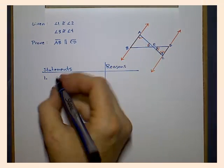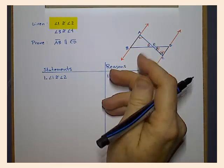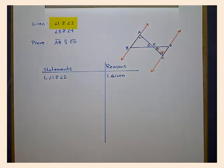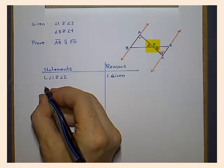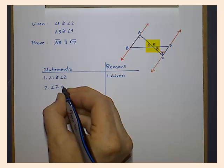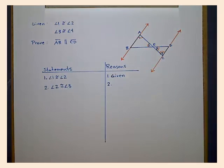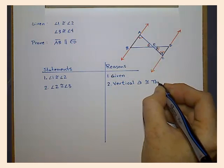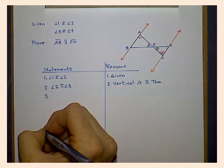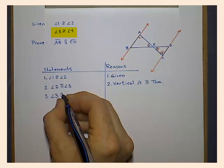We start with one of the given pieces of information. Next, we show that the vertical angles are congruent. And then we bring in the next piece of given information.